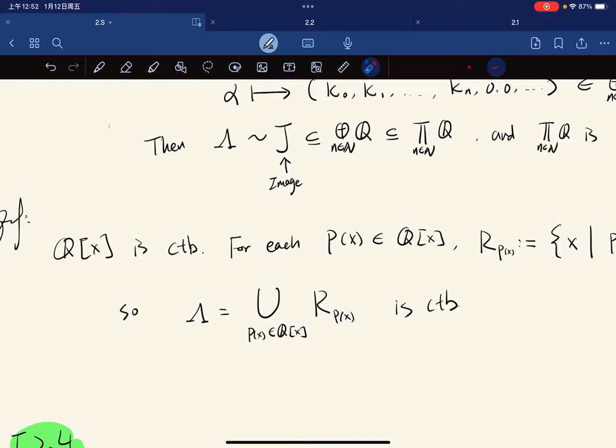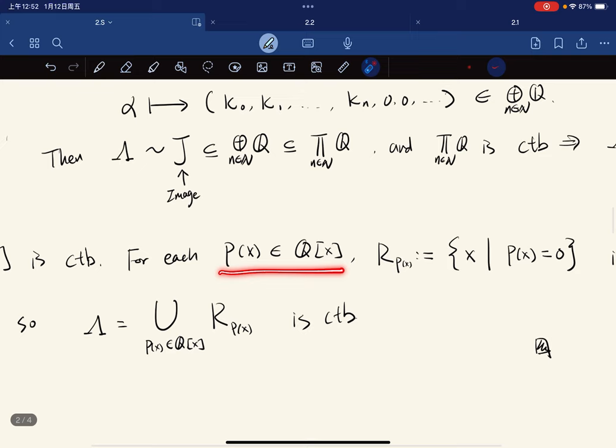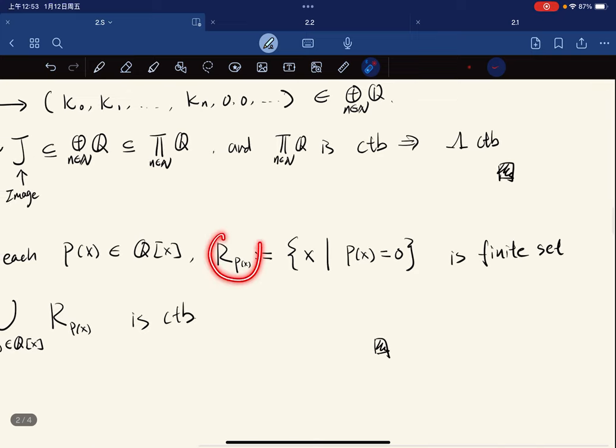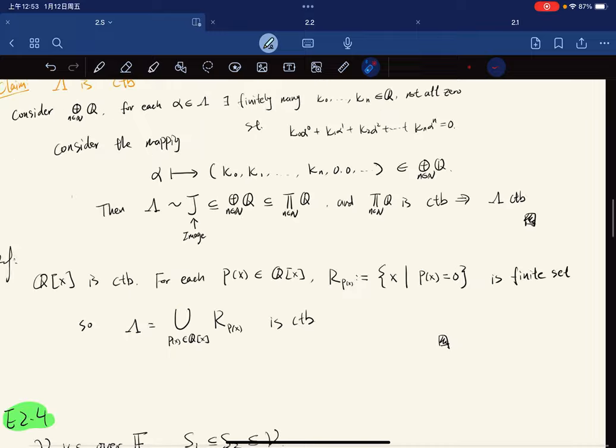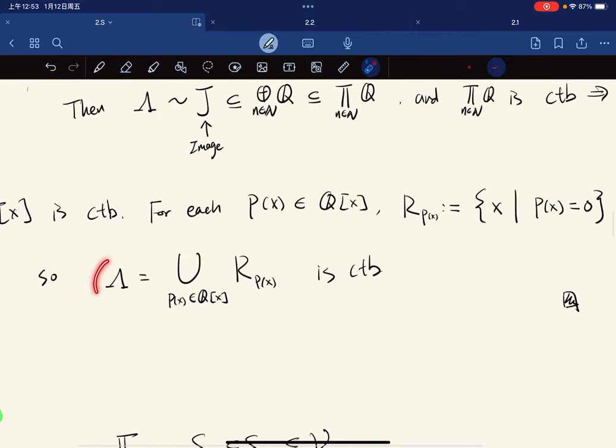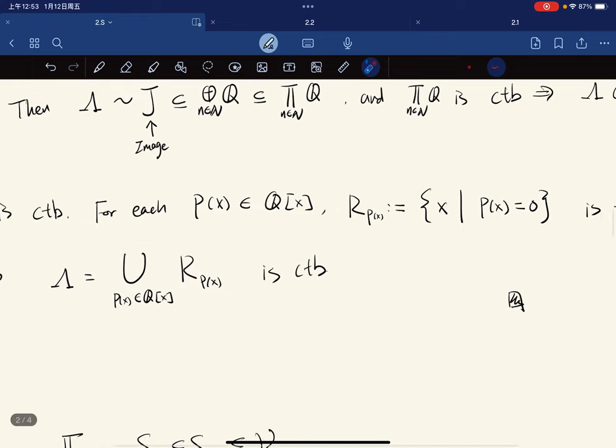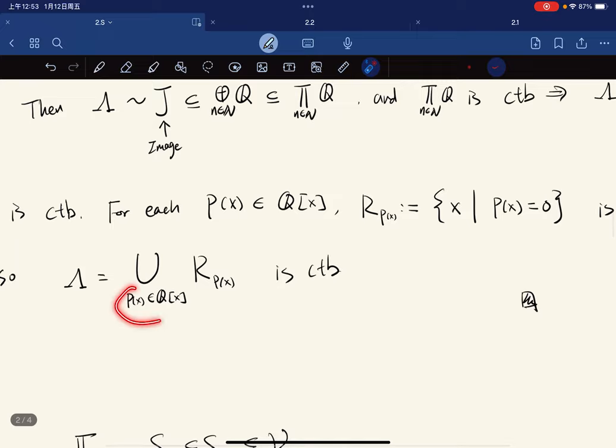The set of all polynomials with rational coefficients is countable. Then for each polynomial, we define the root set such that px equals zero. And this is a finite set by the fundamental theorem of algebra. Then the set of all algebraic numbers is really just this union. A countable union of finite sets is again countable, so we're done.